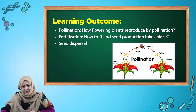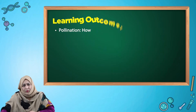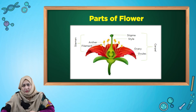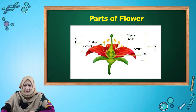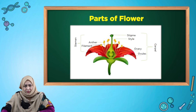By pollination. Fertilization: how fruit and seed production takes place. Seed dispersal: how seeds are dispersed. Before we start, let's talk about the important parts of a flower. Stigma, style, and ovary — which contains ovules — are the female parts of the flower, called the carpel, whereas the anther and filament are called the stamen, which are the male part of a flower.